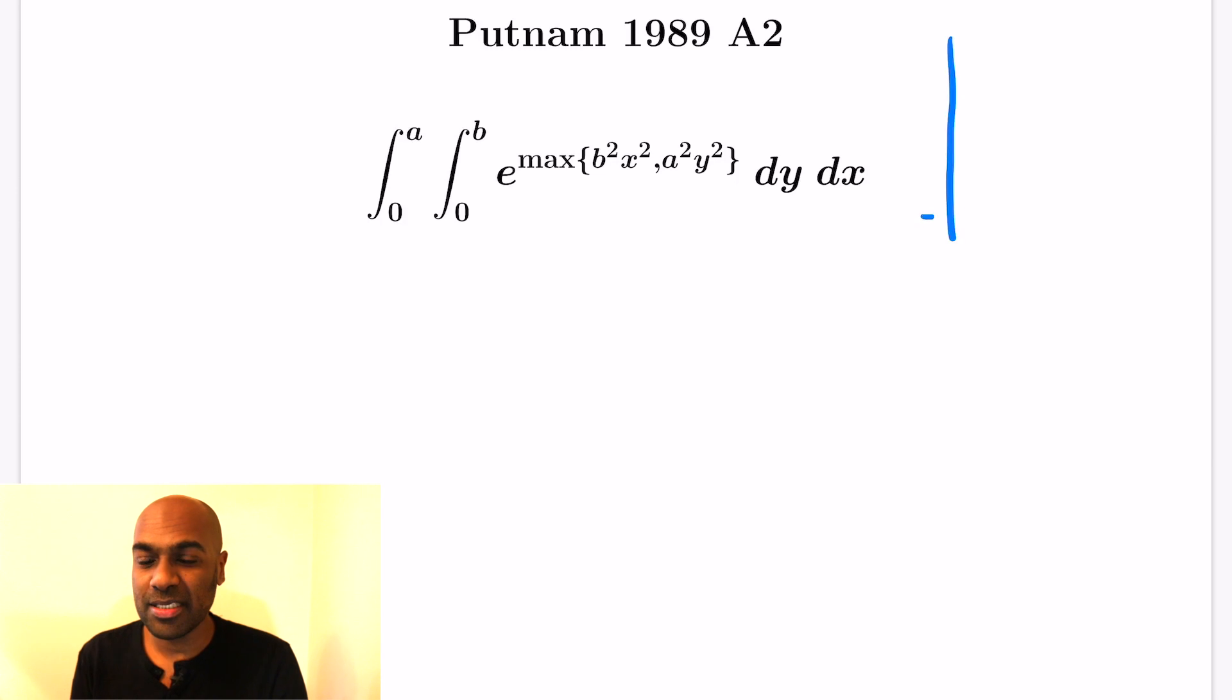So the first problem is a double integral of e to the maximum of b squared x squared, a squared y squared dy dx. The first thing we'll do is draw the region of integration, which is this rectangle here that has vertices 0,0, a,b and then the other two corresponding vertices.